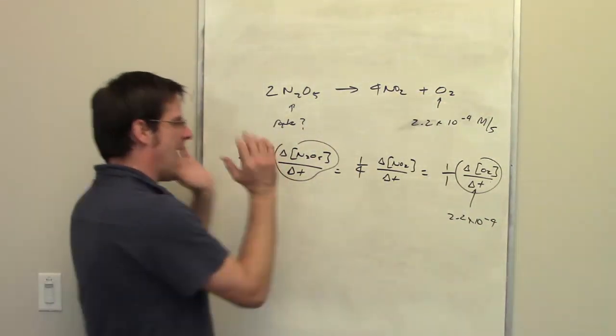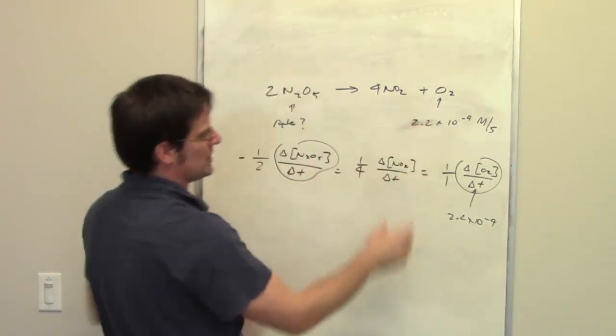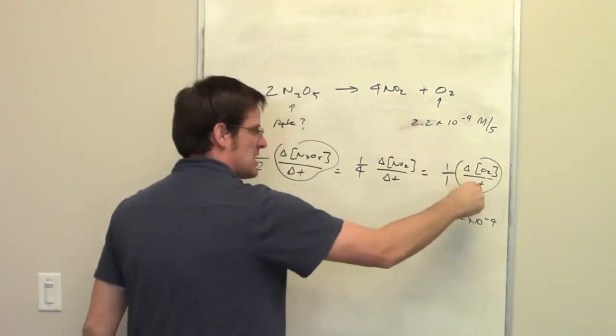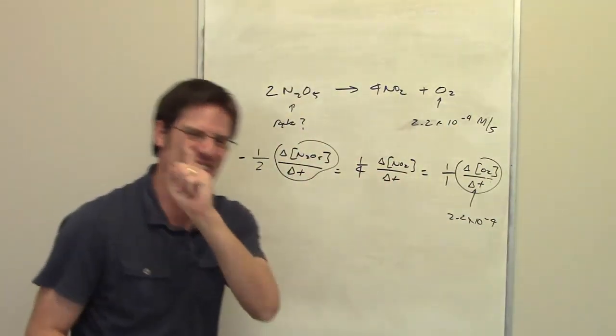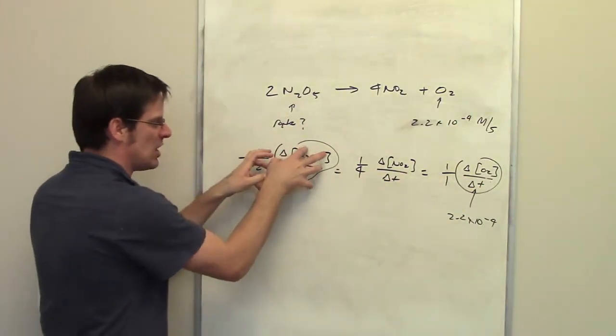Once again, at some moment in time when this reaction is proceeding, the rate of formation of O2, that's this thing, is equal to 2.2 times 10 to the negative 4 molars per second. And it's asking me at that moment, what is the rate of decomposition of this?